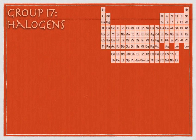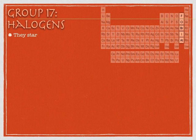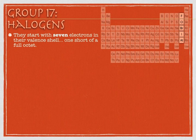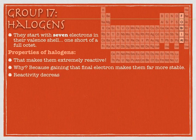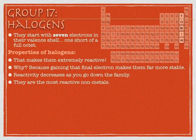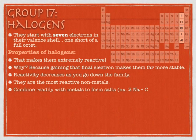Group 17 are the halogens. They're right next to the noble gases. They start with seven valence electrons, which gets them one short of a full octet, and that means they're going to be extremely reactive — they only need to gain one more electron to get to that full outer shell. Non-metals have an opposite reactivity trend than metals: although metals become more reactive going down a family, non-metals become less reactive going down. No doubt that the halogens are the most reactive non-metals, because they only need to gain one more electron.